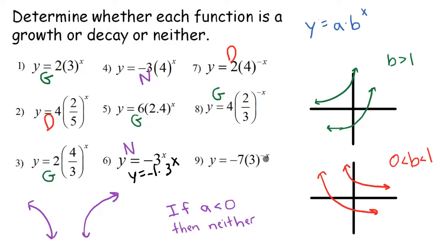And then, number 9, we have a negative multiplier, but actually, our a value is negative. It's smaller than 0, so that's going to be neither.